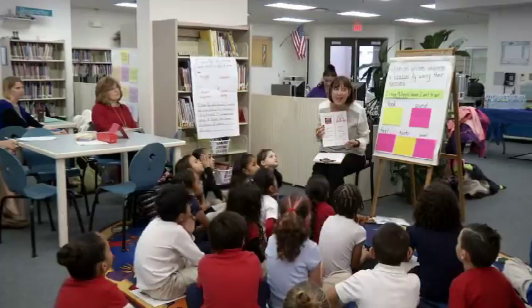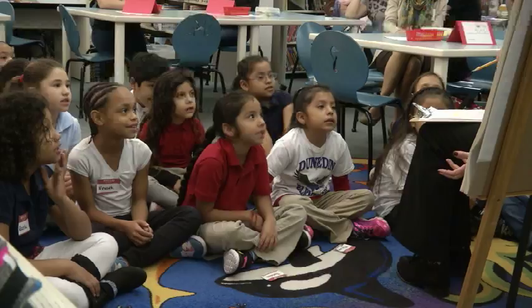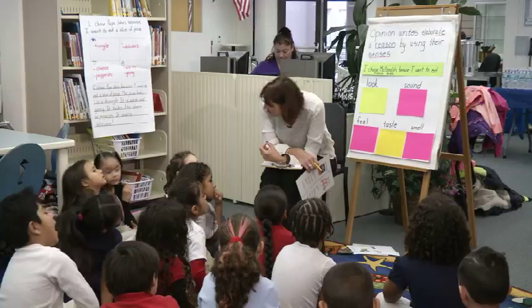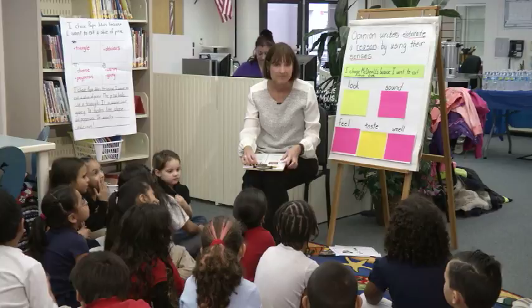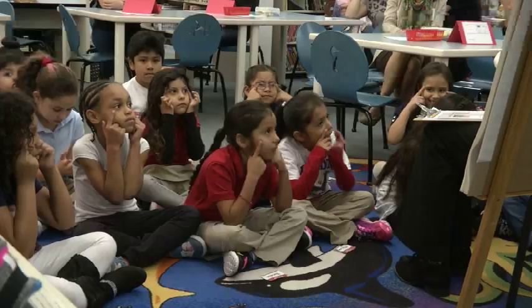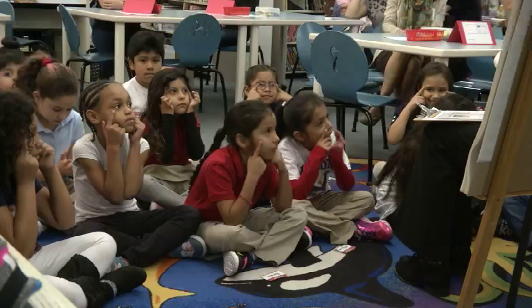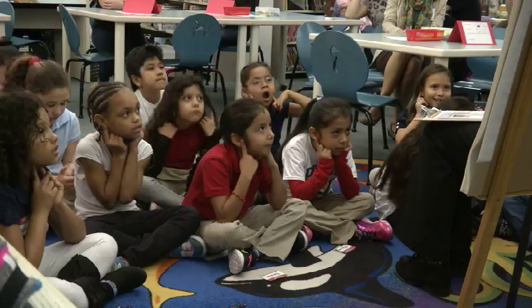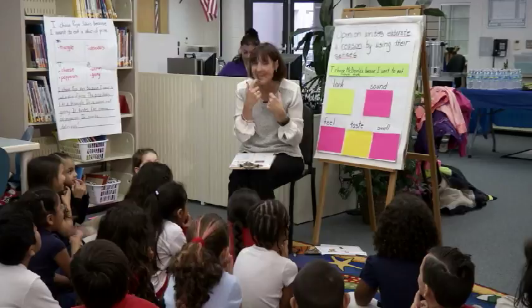You know that — say it with me: elaboration. One way to elaborate is you can use your five senses. Remember your five senses? This is your sense of sight — point to your eyes. This is your sense of hearing. This is smelling. This is taste. And this one is feel. Those are our five senses, and you can use those to elaborate. They're called sensory details. So this is what I want to teach you today: how opinion writers elaborate a reason by using their senses.